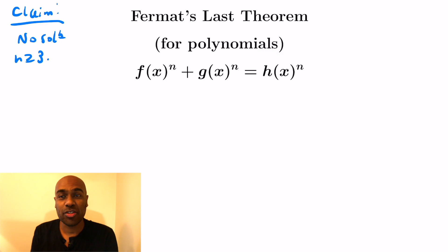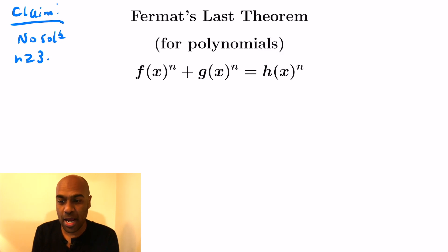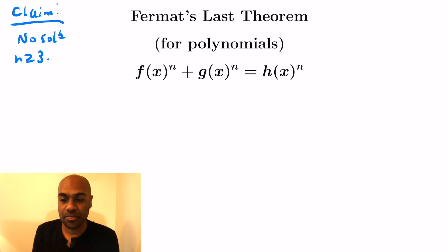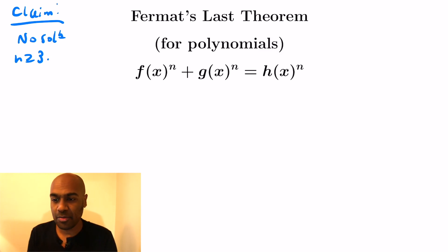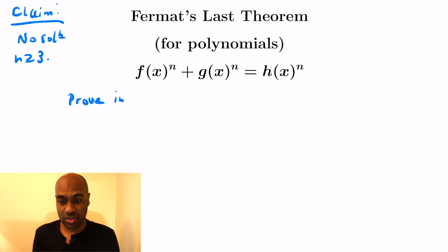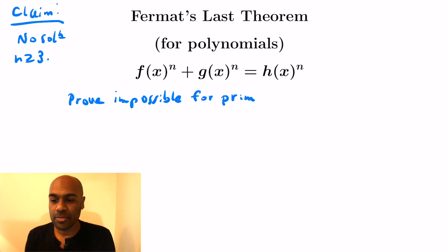How do we proceed? One key step is to reduce the problem to the case where n is prime, then factor the left-hand side — the sum of n-th powers — using the fact that we're over the complex numbers. Any complex polynomial factors into linear polynomials, and we'll use that to factor f^p + g^p. We'll prove it's impossible for primes, and that gives us the full result.